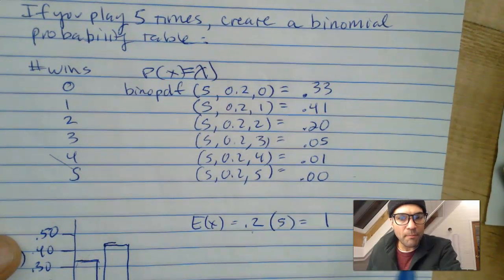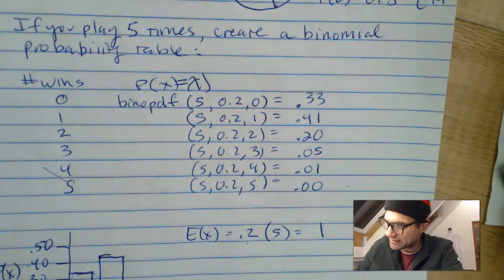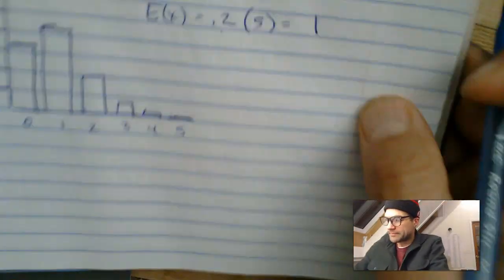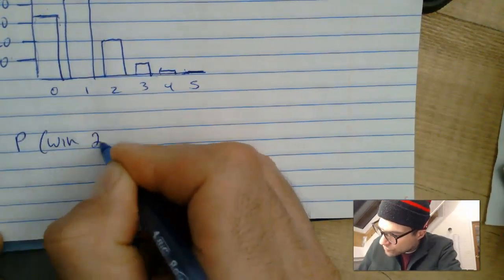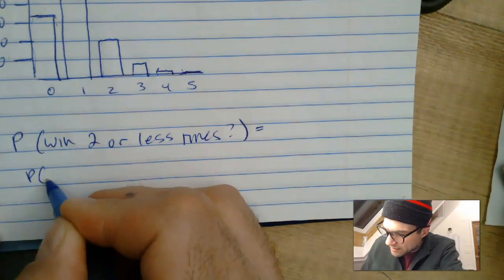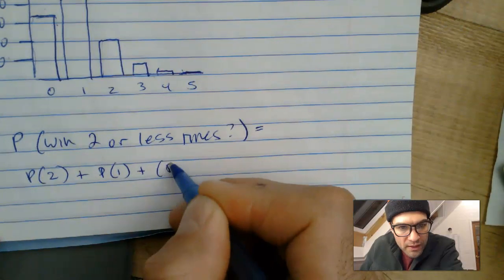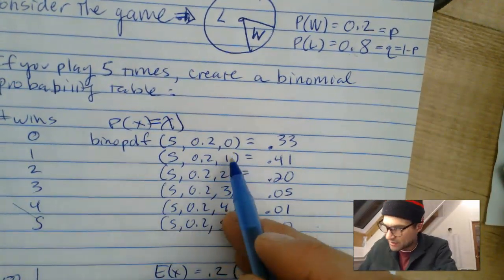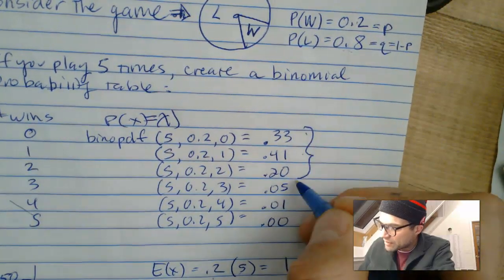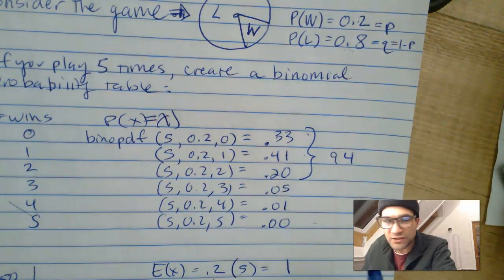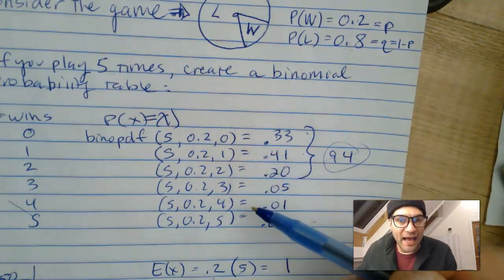If you play five times, here's the binomial table. What if I wanted to know the likelihood you win three or less times, or two or less times? If someone asks what's the probability you win two or less times, that's asking for the probability of winning two, or once, or zero times. You'd have to add those all up — you get about a 94% chance of winning two or less times. But instead of adding those up, the quicker way is using BinoCDF.